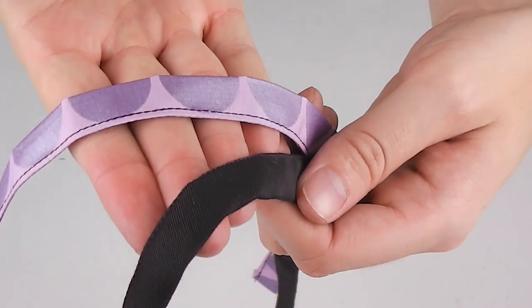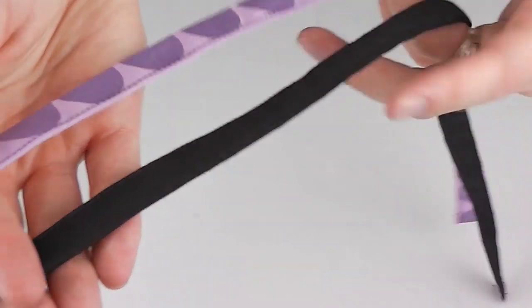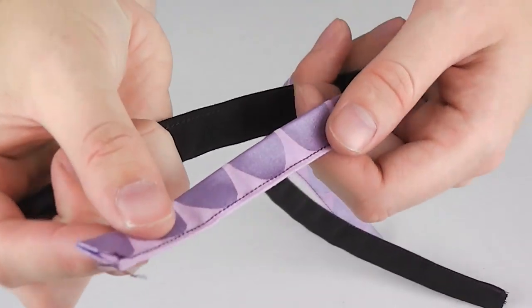Now go back to your sewing machine and sew along the very edge of the seam ensuring both sides of the fabric are being caught by the machine.